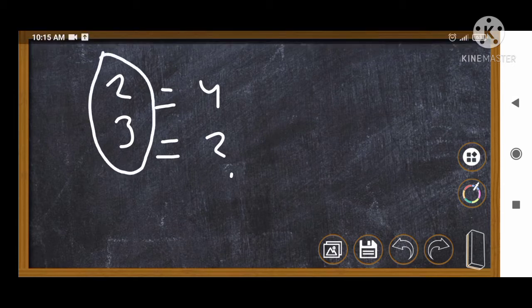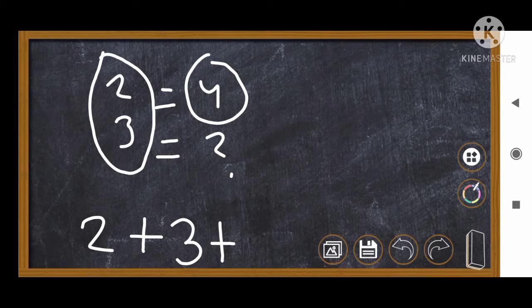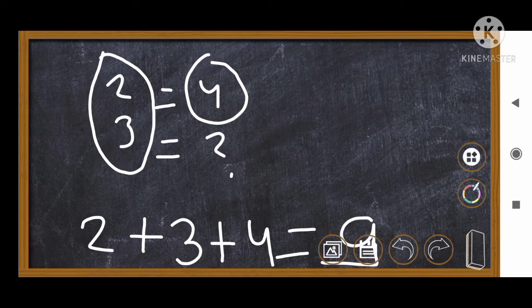2 and 3 will be plus and then 4 will be plus. This is the formula. 2 plus 3 plus 4 is equal to answer. The answer is 9. This is the formula of math.